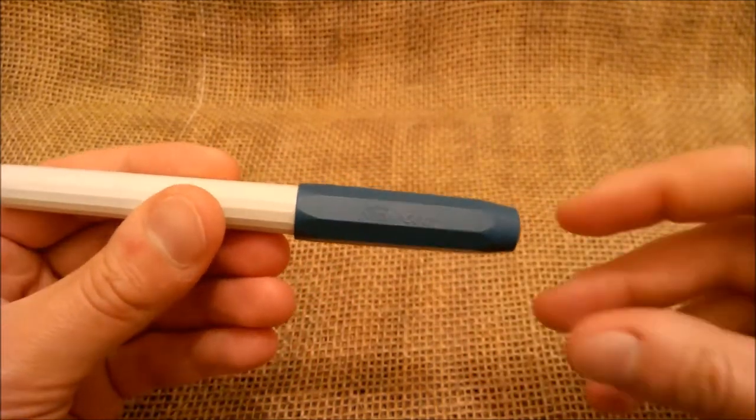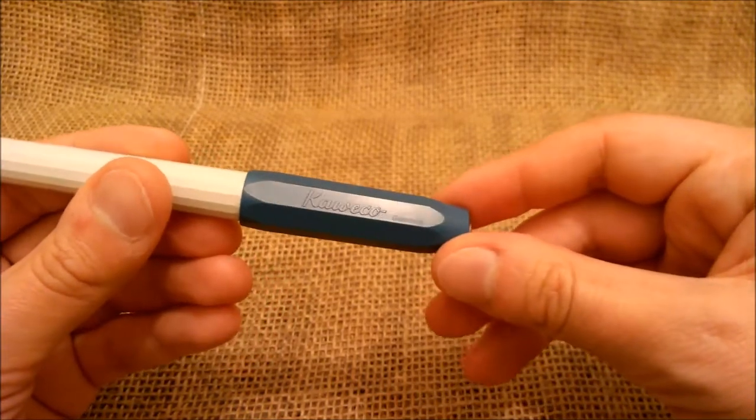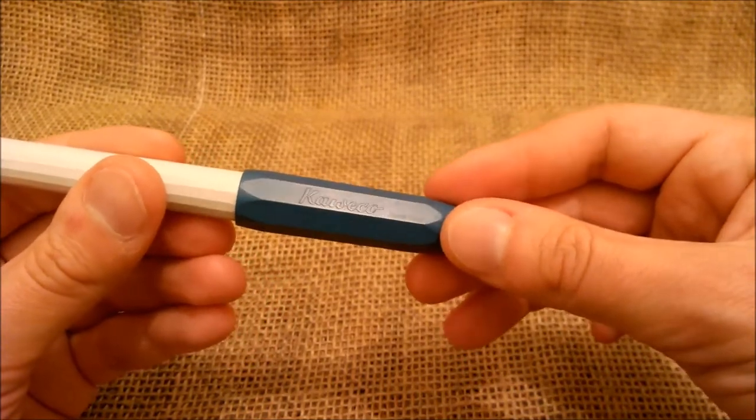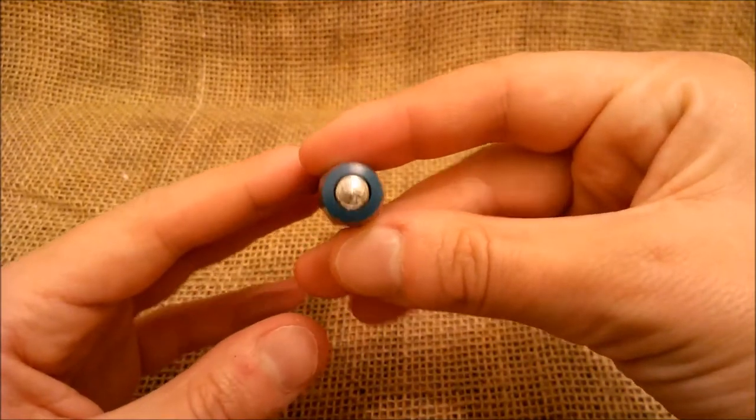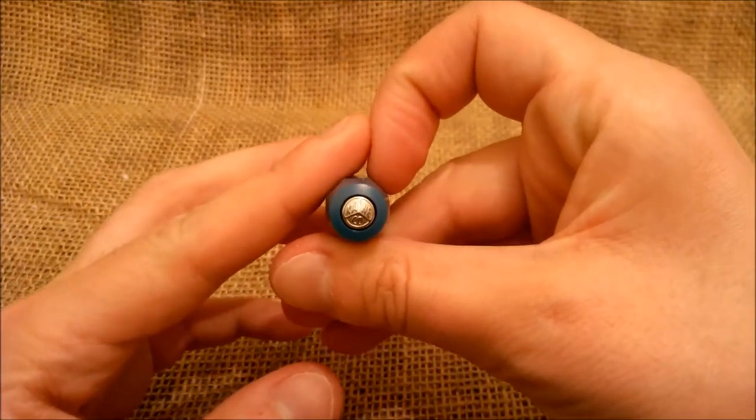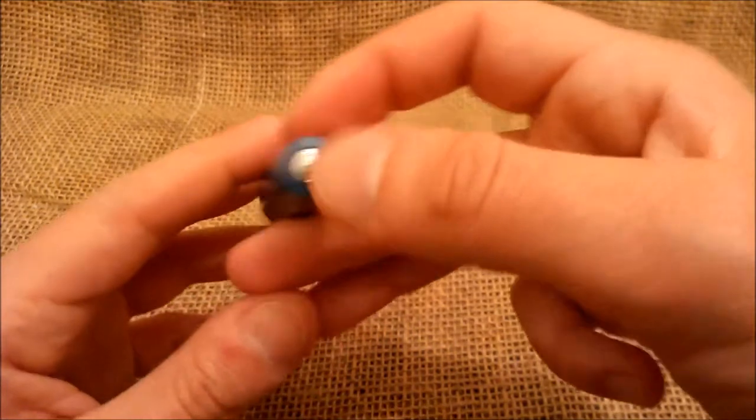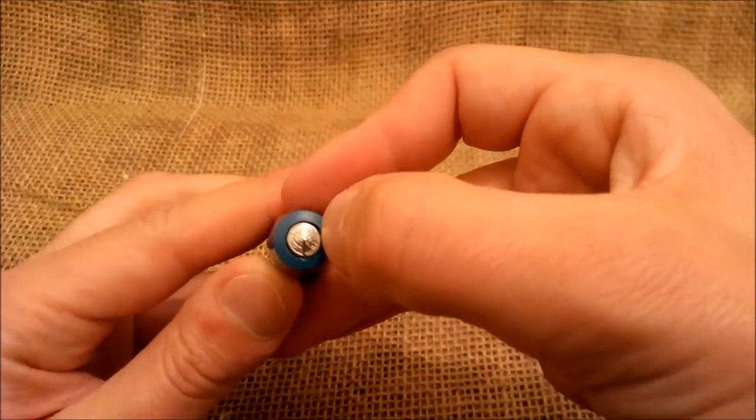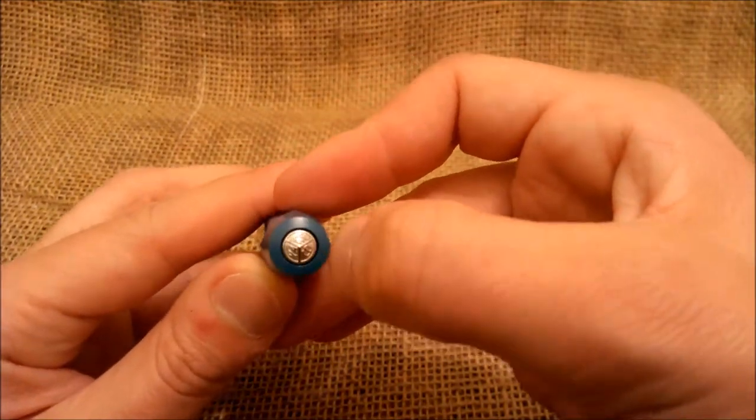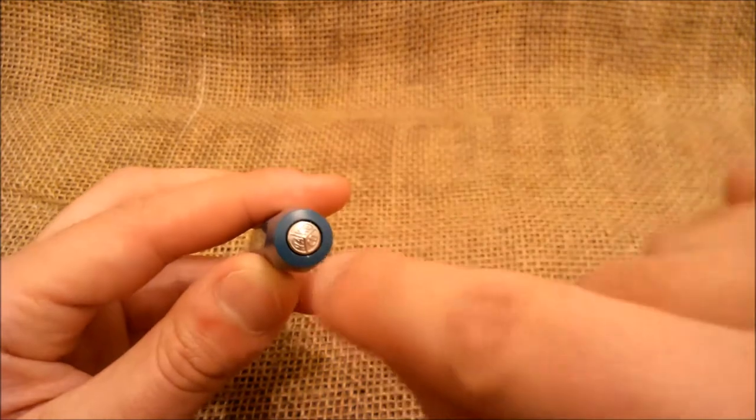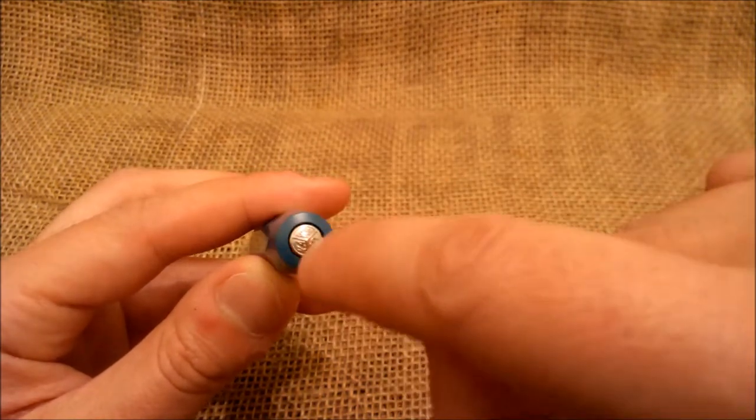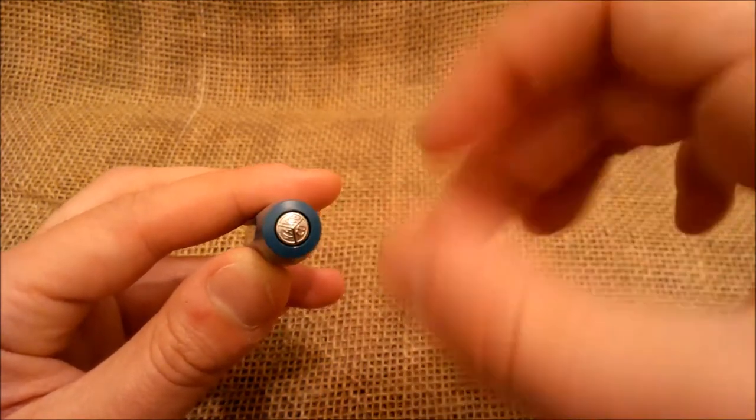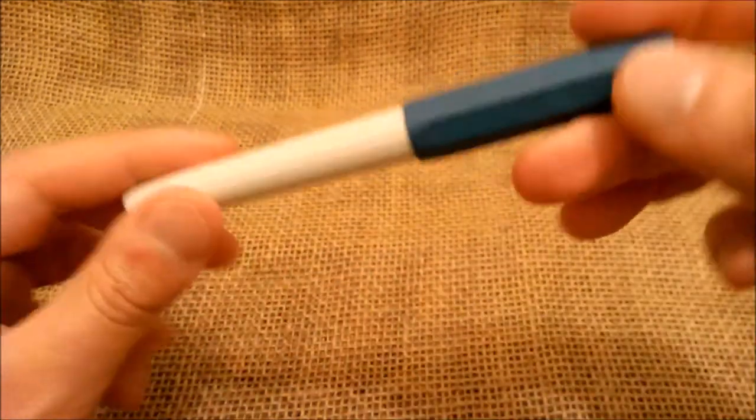On the cap there is engraved Caveco Germany. I think you can see it. Here there is the typical Caveco logo in this metallic medallion. There is this groove around the medallion which is for security purposes because this is a school pen.